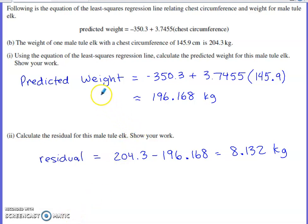Part B says that if we generate a least squares regression line relating chest circumference and weight for the male tule elk, this is the equation that we get. So the y-hat over here is the predicted weight, and that's backed up by what we saw in the scatter plot. That's equal to the y-intercept listed first plus the slope times the x-axis variable, which is chest circumference. They say one of the male tule elk had a chest circumference of 145.9 centimeters and a weight of 204.3 kilograms. I'm taking that 145.9, putting it in place of the chest circumference in the prediction equation, and my predicted weight after I toss that into the calculator ends up being 196.168 kilograms.